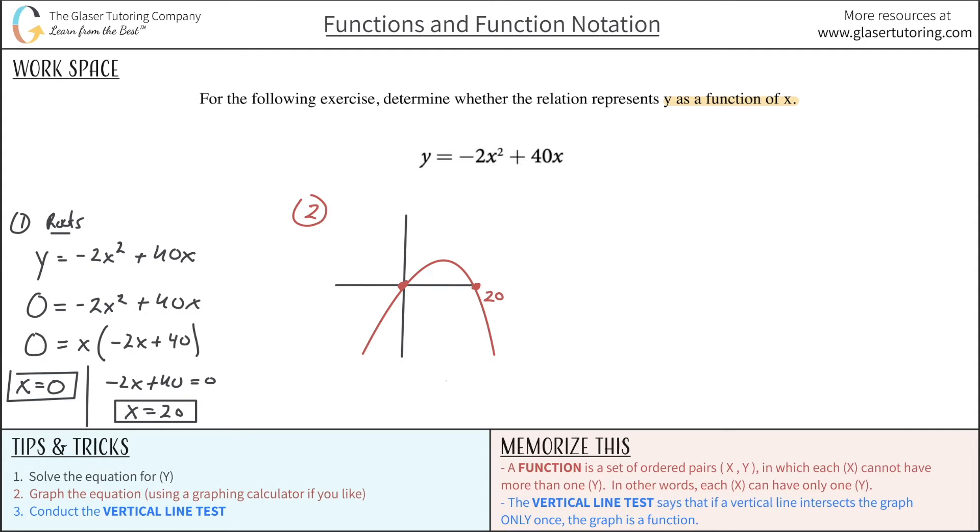Because the third step now is to conduct the vertical line test to determine whether this thing that we drew here is indeed a function. So the vertical line test says that if a vertical line intersects the graph only once, then the graph is a function.